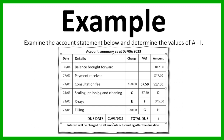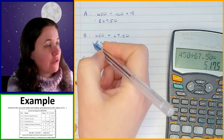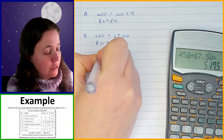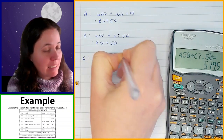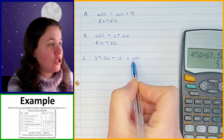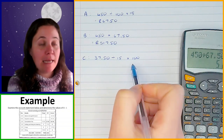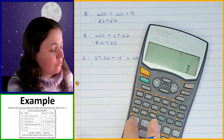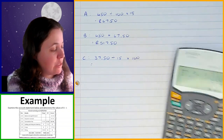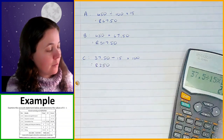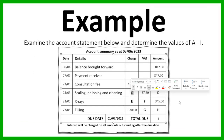Now we're going to work out C, which is for the scaling, polishing, and cleaning. We don't know the charge amount, but we do know the VAT amount. So we're going to use the VAT amount to work out the charge. The VAT amount is R37.50, so we take 37.50 ÷ 15 × 100, because VAT is 15% and the charge is 100% of what the dentist wants to get — the price exclusive of VAT. That gives us R250.